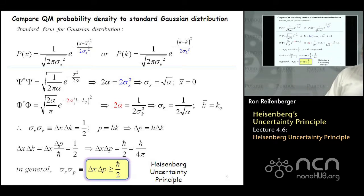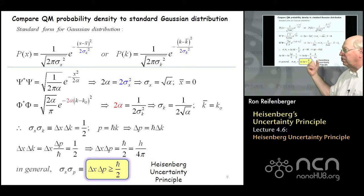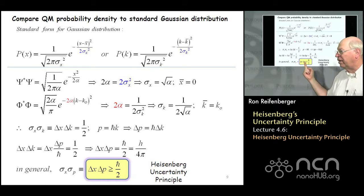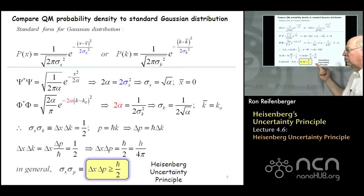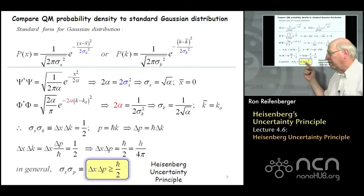On this slide I compare the quantum mechanical probability density to the standard form for the Gaussian distribution function, with all the equations in one place. At the end of the day, you have the uncertainty in position times the uncertainty in momentum — delta x times delta p — which must be greater than or equal to h-bar over 2. The equal sign applies when dealing with Gaussian-shaped wave packets; if the wave packet is not Gaussian, the greater-than sign comes into play.